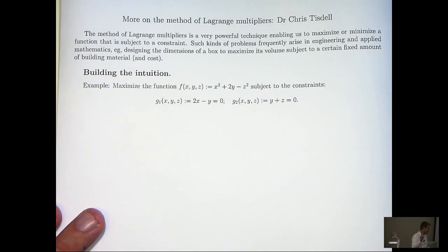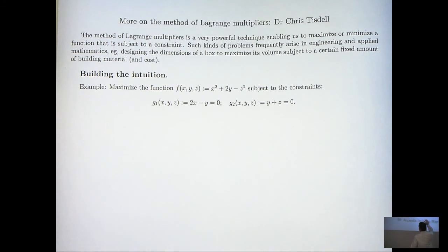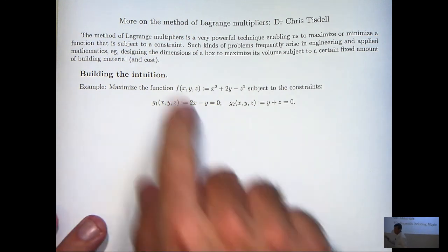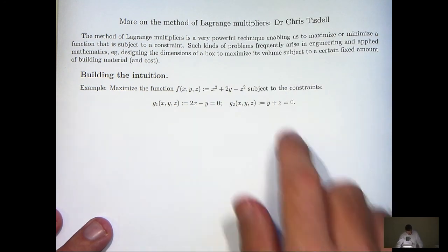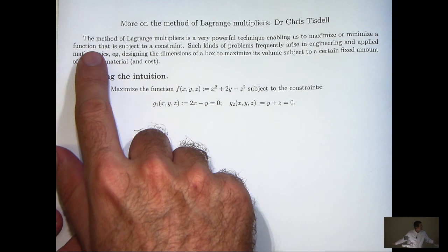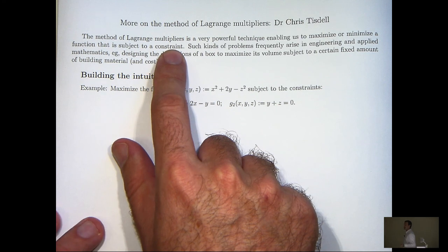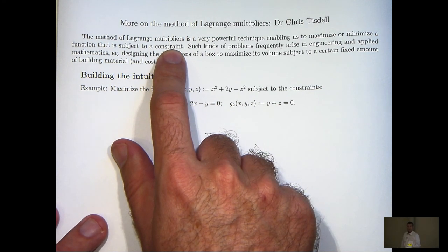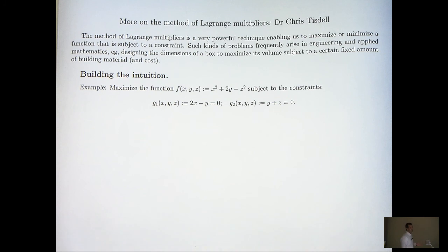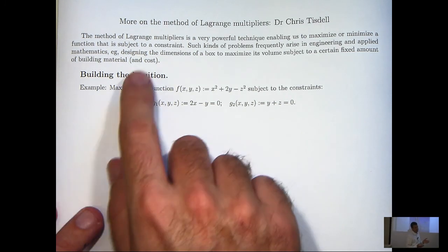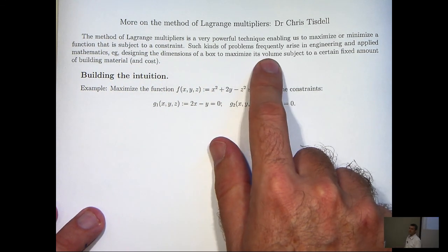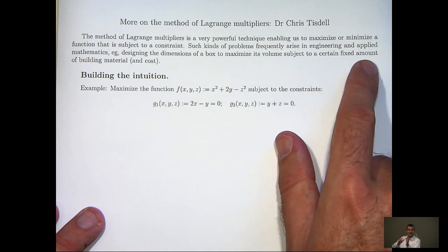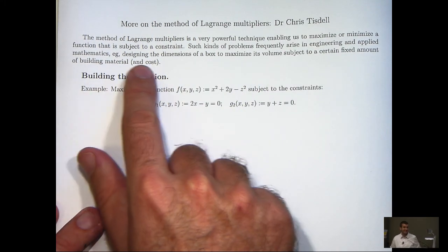Before we get to that, let's motivate the topic. Why are these ideas important? Well, the method of Lagrange multipliers is a very powerful technique and it gives us the power to maximise or minimise a function subject to a constraint or constraints. Where would you see such a problem? In very simple terms, imagine that you're asked to design the dimensions of a box that maximises the volume subject to a certain fixed amount of building material and cost.